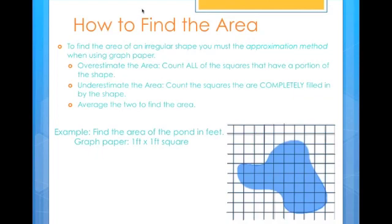Say I want to find the area of this pond in feet. If each grid represents one foot by one foot, then the area of each square is one square foot.